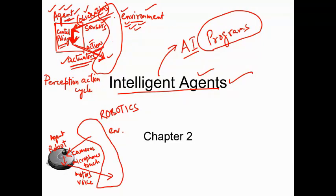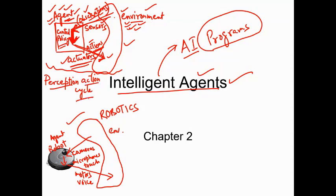This is a very clear diagram about the interaction between the agent and environment. The whole scenario — the whole picture — is called the perception-action cycle, because it perceives the environmental feelings and then it acts on those feelings.